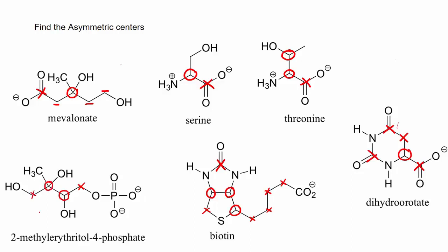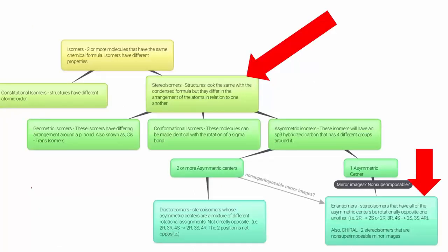If we have one asymmetric center, look at the mirror image — is it non-superimposable? If so, the relationship between those two compounds is called enantiomeric; they are an enantiomer pair. That's when you have stereoisomers that have opposite rotation. We'll get to naming and rotation in the next section, but for now let me show you what an enantiomer pair looks like.